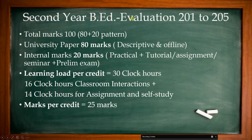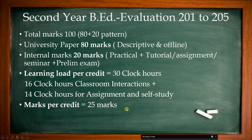Let us see the second year B.A.D. evaluation pattern for papers 201 to 205. Total marks for each paper is 100, with an 80-20 pattern — 80 marks for the university paper which will be descriptive and offline, and 20 internal marks including practical tutorials, assignments, and preliminary examinations. Learning load for each paper is 30 clock hours: 16 hours for classroom interaction and 14 hours for assignments and self-study. Marks per credit are 25.